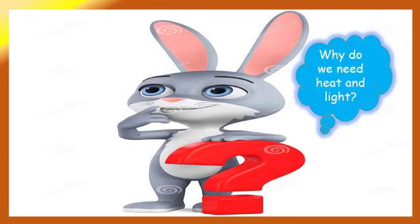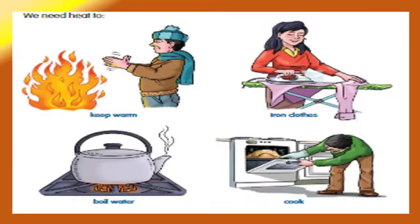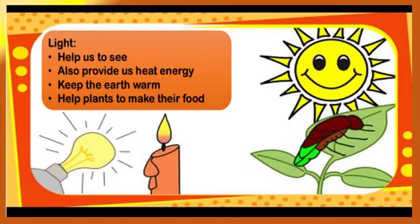Why do we need heat and light? We need heat to keep ourselves warm, to iron our clothes, boil water, and to cook our food. Light energy helps us to see, also provides us heat energy, keeps the earth warm, and helps plants to make their food.